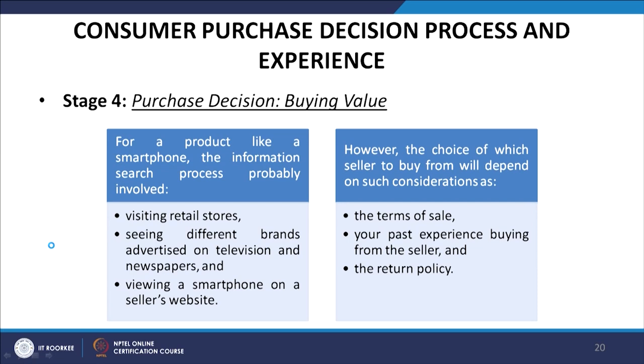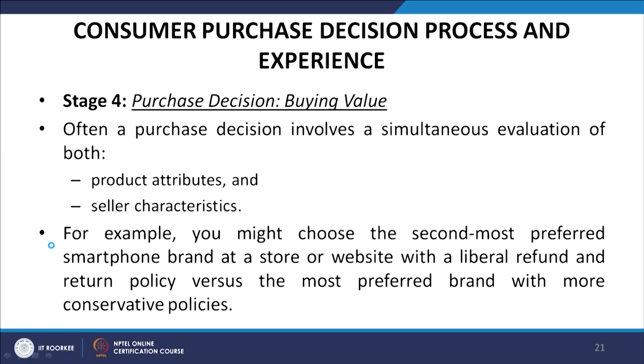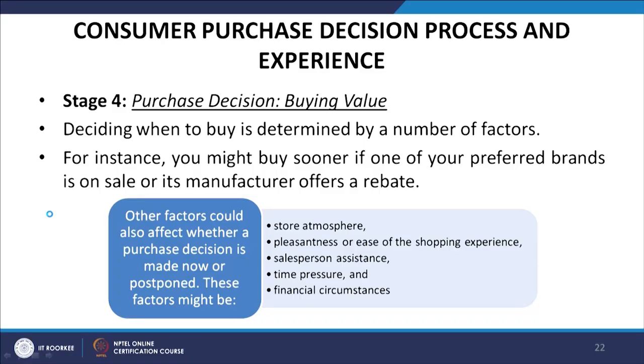A purchase decision often involves simultaneously evaluating both product attributes and seller characteristics. For example, you might choose the second most preferred smartphone brand from a store with a liberal return policy, versus the most preferred brand from a seller with more conservative policies. Deciding when to buy is also influenced by factors such as whether a preferred brand is on sale or a rebate is being offered.